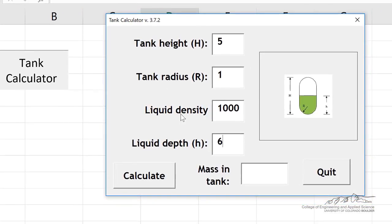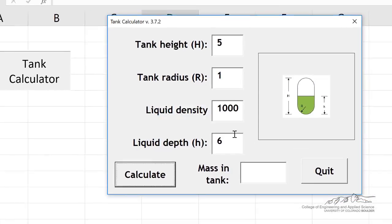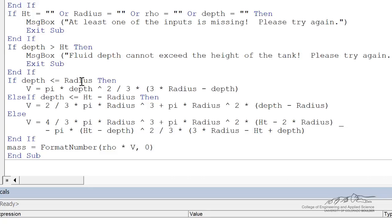So if we run it with something that doesn't make sense, the height of the tank is 5, yet the depth is 6, it's going to notify the user of that. Fluid depth cannot exceed the height of the tank. Please try again. And it's going to exit the sub. So that's how we can protect against the user inputting something that just doesn't make sense when the depth is greater than the height of the tank.